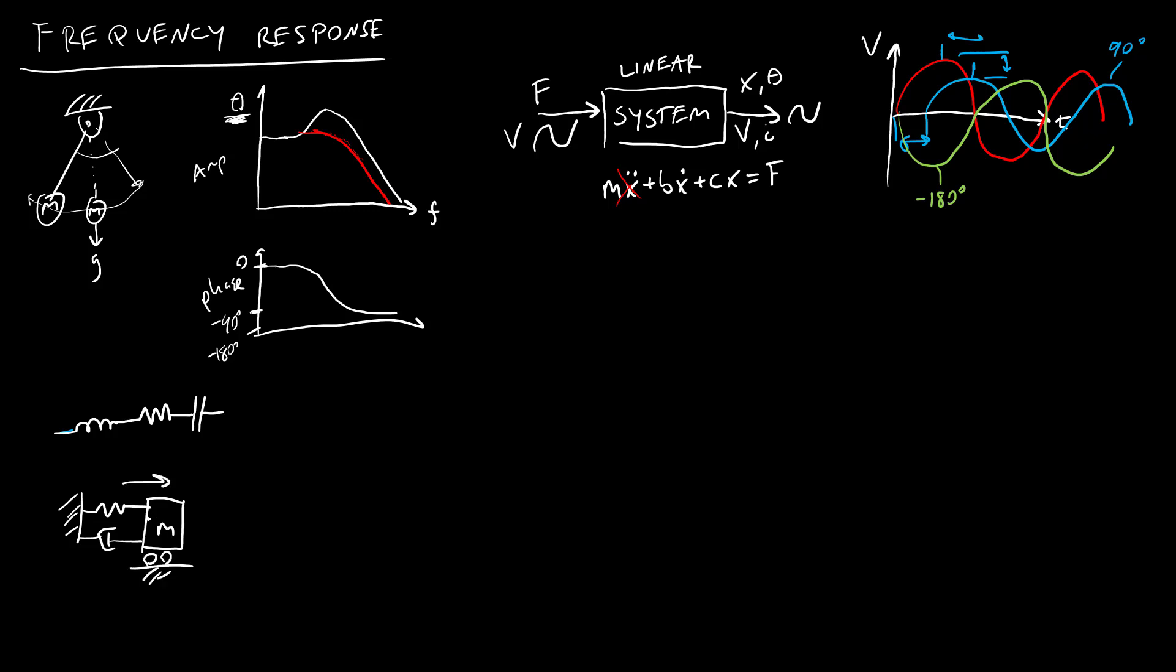You have a mass on a roller, and you're applying a force to the mass. Energy is being traded back and forth between the elastic potential energy of the spring and the kinetic energy of the mass.